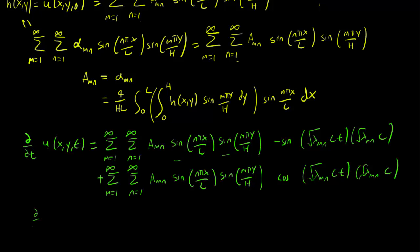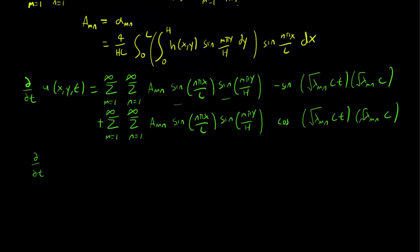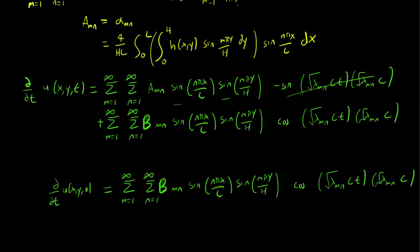We are going to try to plug in t equals 0 to use our initial condition for the first derivative of u. Then we do that once more. The cosine term becomes 1 and the sine term becomes 0, so the first term just entirely disappears. This is 0. And we get just the b_n terms. And of course, cosine of 0 is 1, so this gets cancelled out too.